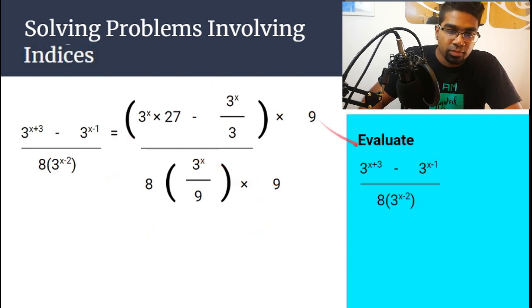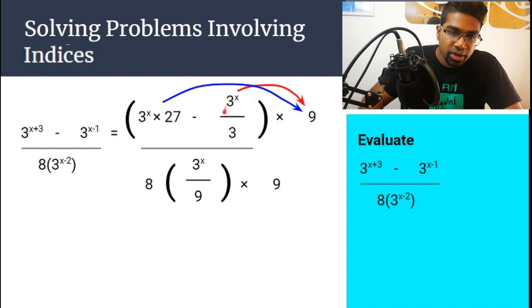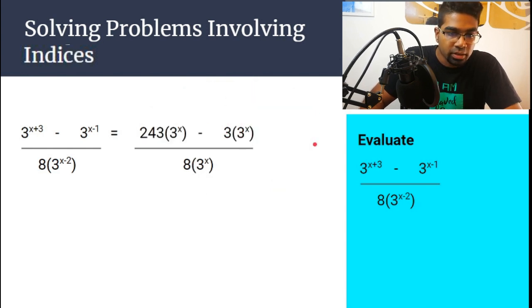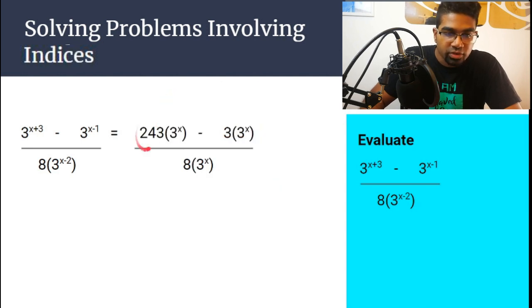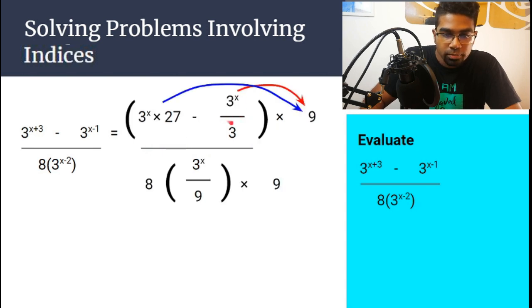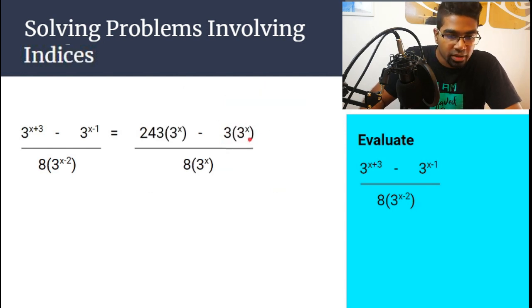And then the whole numerator multiplied by 9. For the numerator, we expand first. So 3x times 27 multiplied by 9, also negative 3x over 3 multiplied by 9. 27 times 9 will give us 243 times 3x. And then here, 3x over 3 multiplied by 9. 3 we can simplify, 9 divided by 3 is 3. So we get 3, 3x.